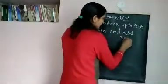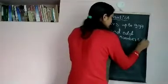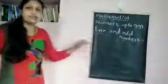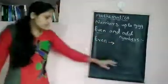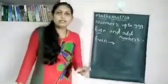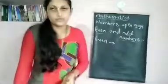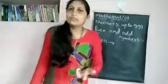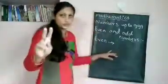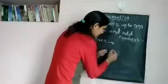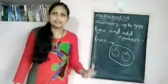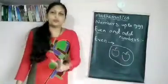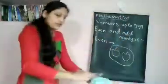Even and odd numbers. What are even and odd numbers? First let us see what are even numbers. You know what do you mean by pair? For example, we say pair of shoes, pair of arms. What is the meaning of pair? Pair means group of two.